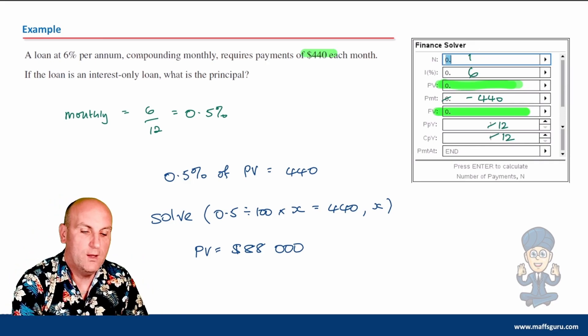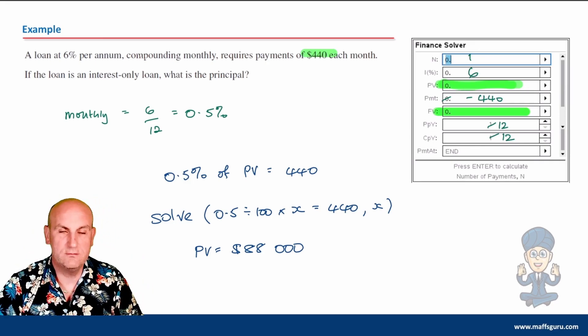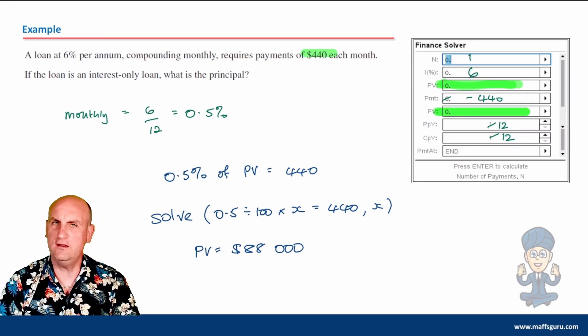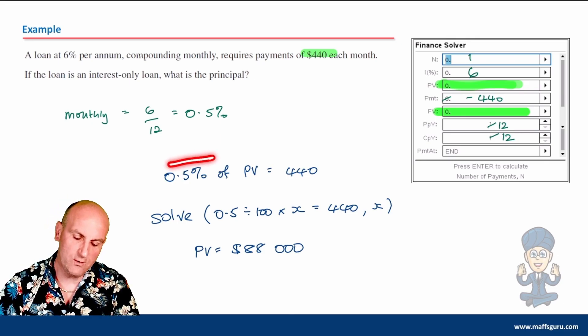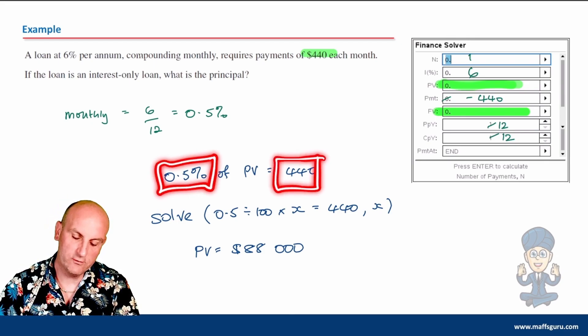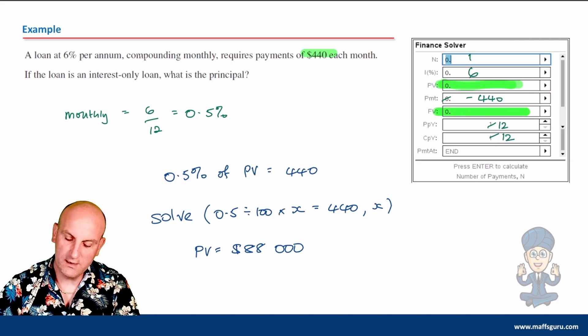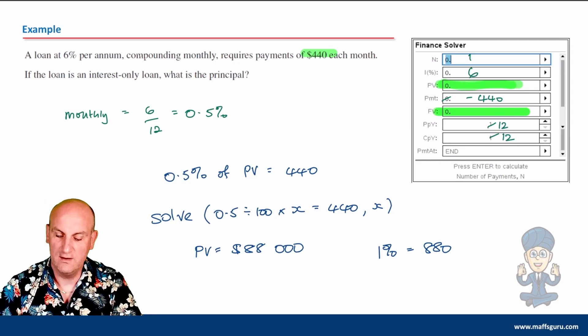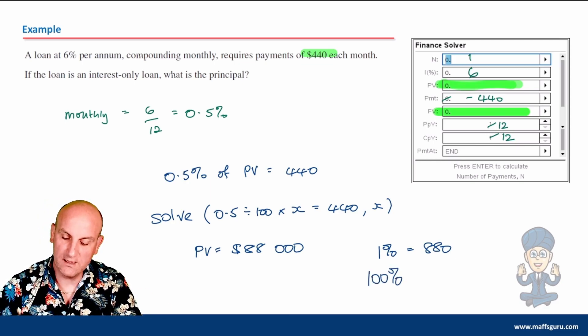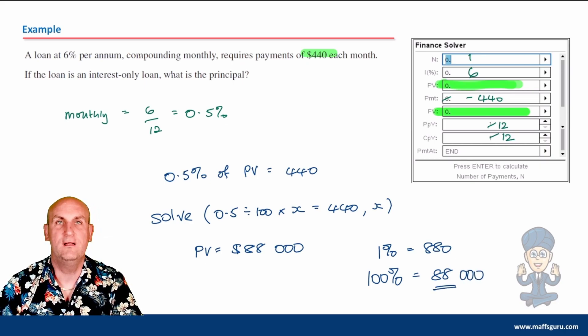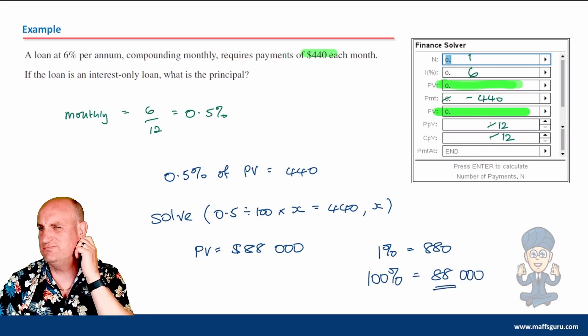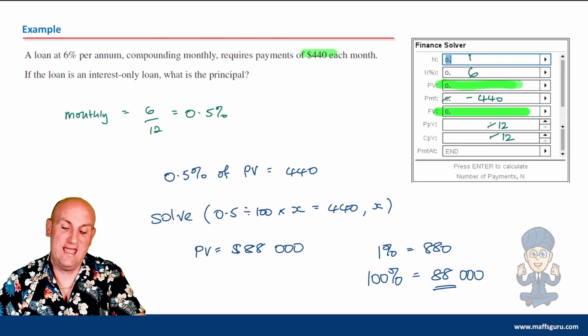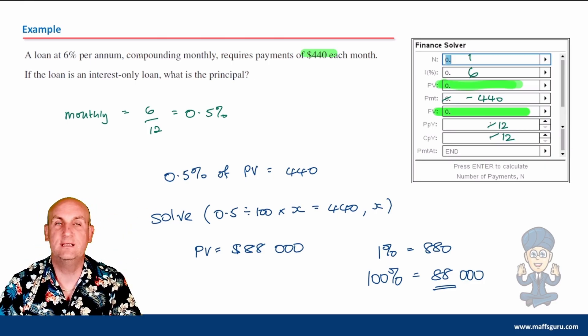Interestingly, one of my students said you can do that in your head. If half a percent is $440, then 1% would be $880. So 100% of what I started with would be $88,000. I've been teaching for thousands of years and that's the first time I thought of doing that. There are other ways of being able to do this.